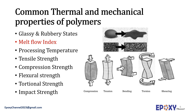Glassy and rubbery states: polymers above a certain temperature can be flexible, and this flexible state is called the rubbery state. Melt flow index, or MFI, is reciprocally related to the molecular weight and is a measure of the ease of flow of the melt of a thermoplastic polymer. It is defined as the mass of polymer in grams flowing in 10 minutes based on specific standard conditions. Processing temperature refers to the temperature at which a polymer can be easily processed in injection molding or extrusion processes. Finally, mechanical performance: different applications require different values; mechanical properties can be measured as tensile, compression, flexural, torsional, and impact strain.